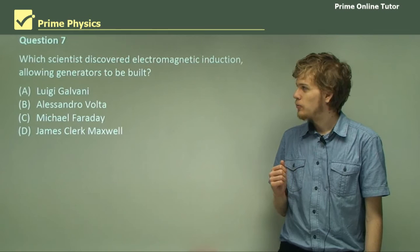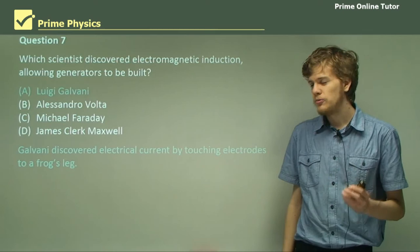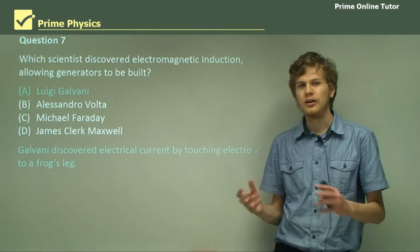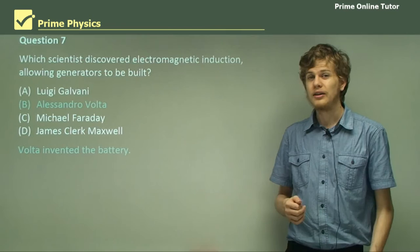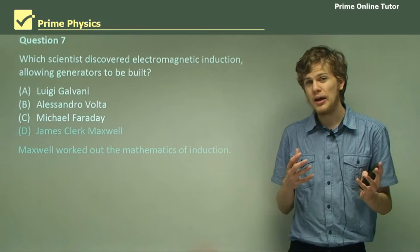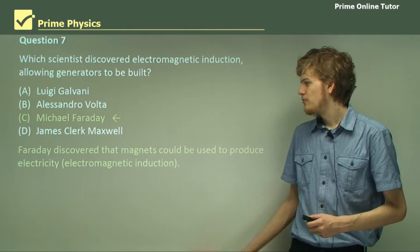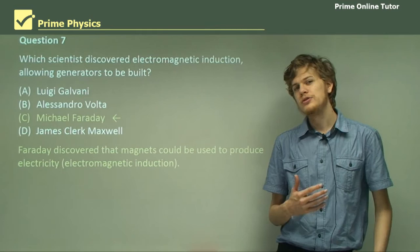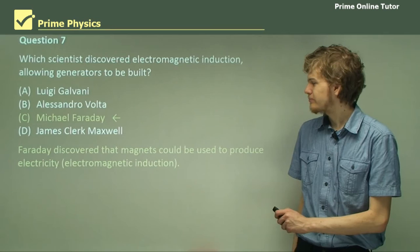Question seven: which scientist discovered electromagnetic induction, which allowed generators to be built? Was it Galvani, Volta, Faraday, or Maxwell? Galvani was the one who discovered that he could twitch a frog's leg by producing electricity. Volta was the one who invented the battery and proved that the animal electricity in Galvani's frog leg came from the metals and not from the leg. Maxwell was able to work out the mathematics of electromagnetic induction, but the one who discovered it in the first place was Michael Faraday — so C is the correct answer. Faraday discovered that moving a magnet near a coil of wire would produce an electric current, so all we need is a source of kinetic energy to move the magnet near the electric wire.